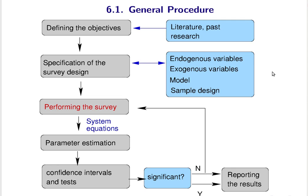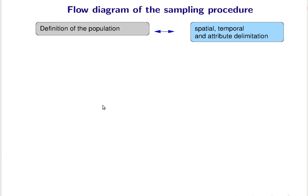Now we look in detail at performing the survey. First you need to define the population — the basis from where you want to draw your sample, for example all the people in Germany. The population needs to be delimited spatially, temporally, and with respect to attributes. It's important to have an exact specification of your population, because otherwise your statistical statements are not valid. Since you cannot survey the whole population, you need to define the sampling base — for example, some register from which you draw samples.